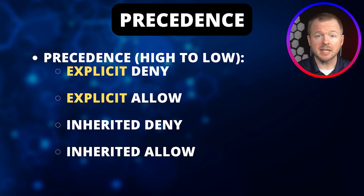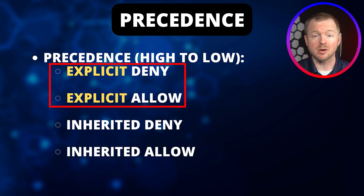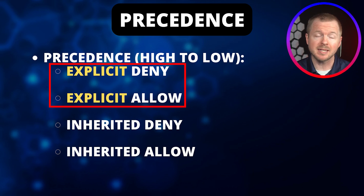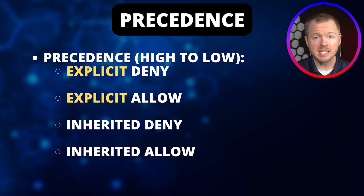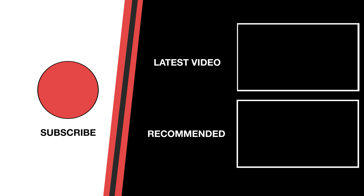On the screen, I've laid out the precedence order of permissions in the Windows operating system. As you can see, if permissions are explicitly set, they take precedence over inherited permissions. Explicitly denied permissions are also the highest precedence permissions that you can have on the Windows operating system.